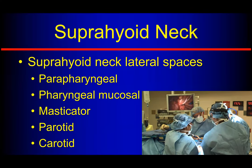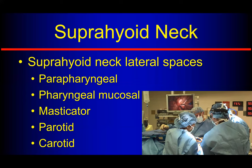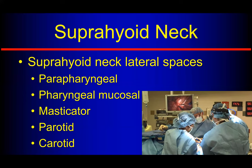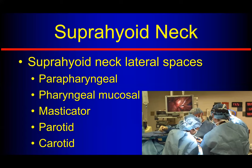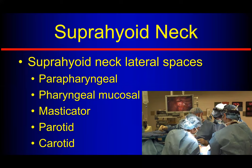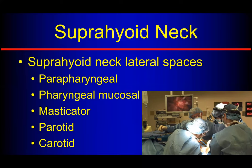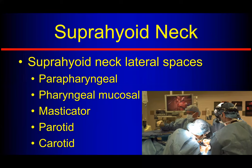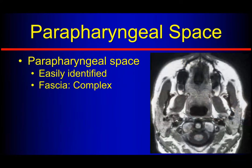In the suprahyoid neck, we have these lateral spaces: parapharyngeal, pharyngeal mucosal, masticator, parotid, and carotid spaces. It's our job to think about these and give the surgeons some idea of where they're going and what they're after — we want to help them understand the anatomy in a cross-sectional area before they get to the operating room. I'm going to take an axial T1 image without contrast and outline all of these spaces for the suprahyoid neck, looking at graphics and at CT and MRI of this anatomy.